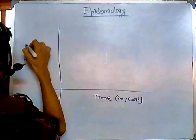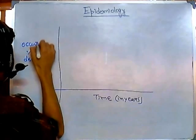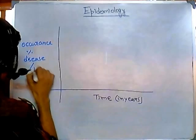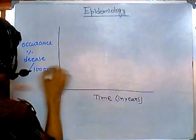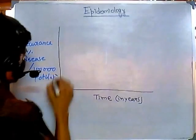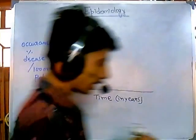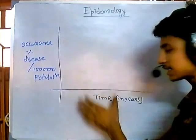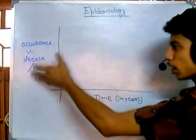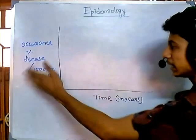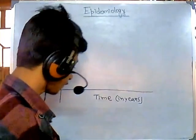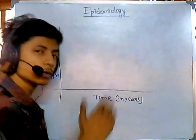The y-axis shows the occurrence of the disease per one lakh population, and the x-axis shows time duration. So the graph represents the percent occurrence of the disease per one lakh population over time.